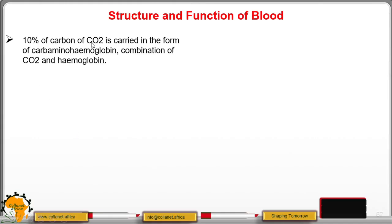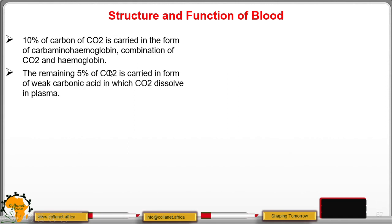Ten percent of carbon dioxide is carried in the form of carbaminohemoglobin — a combination of carbon dioxide and hemoglobin. The remaining 5 percent of carbon dioxide is carried as weak carbonic acid dissolved in the plasma.